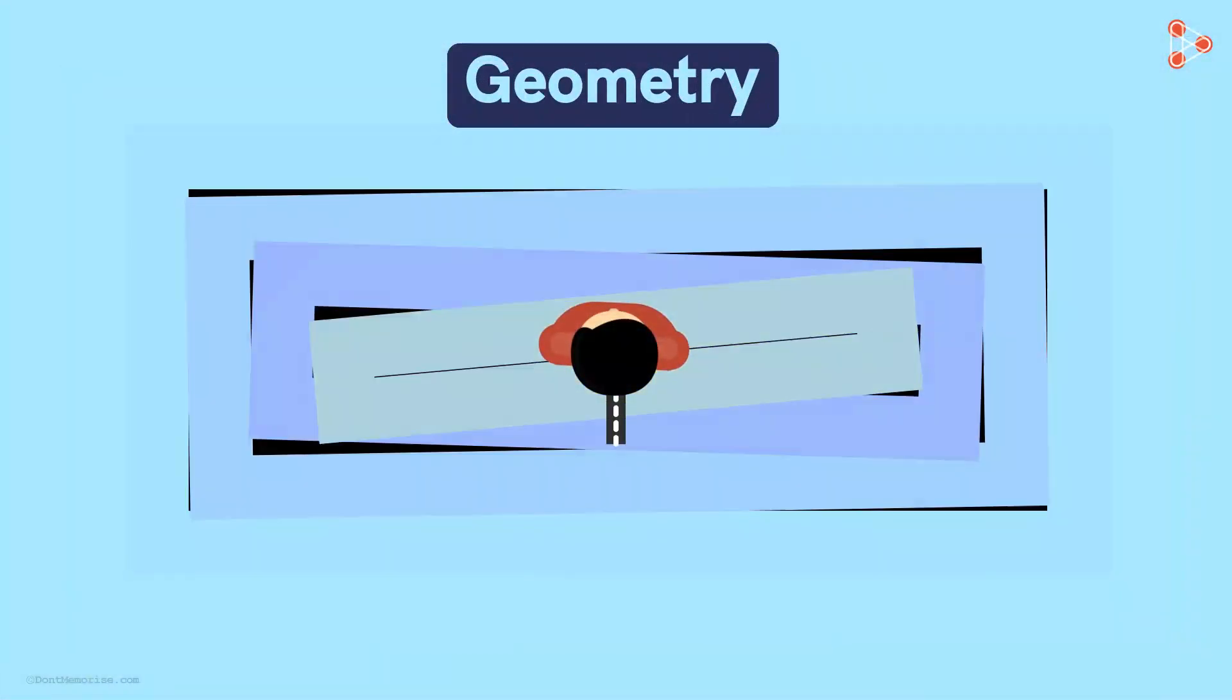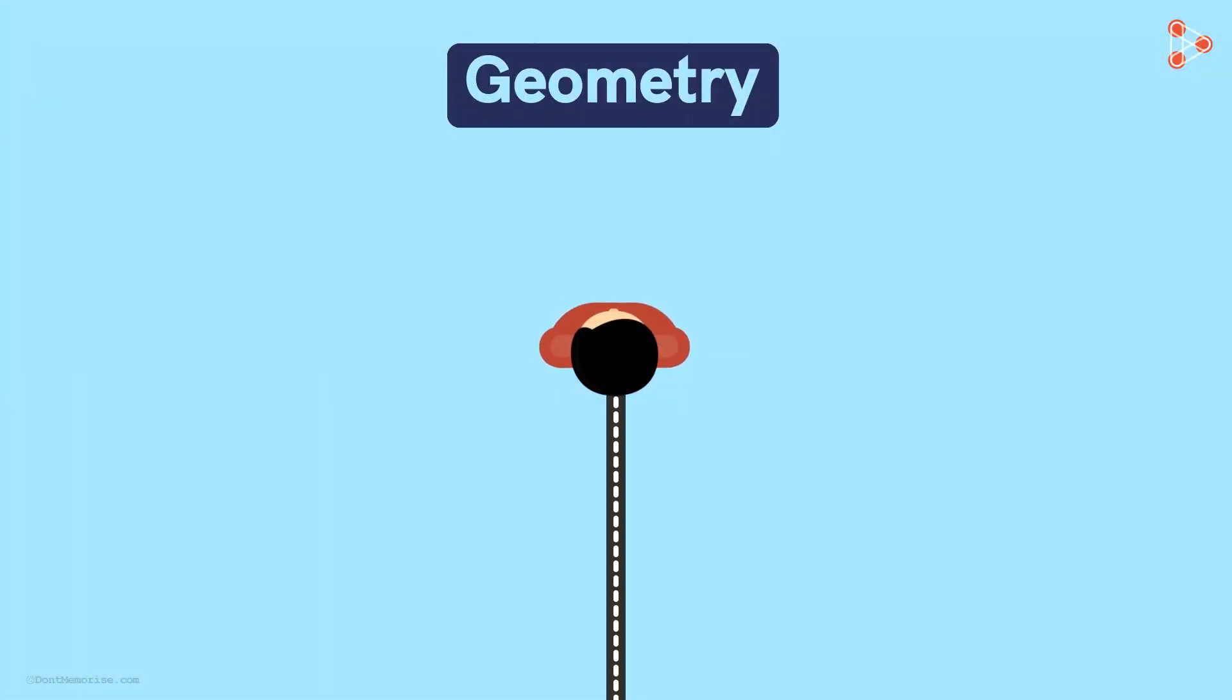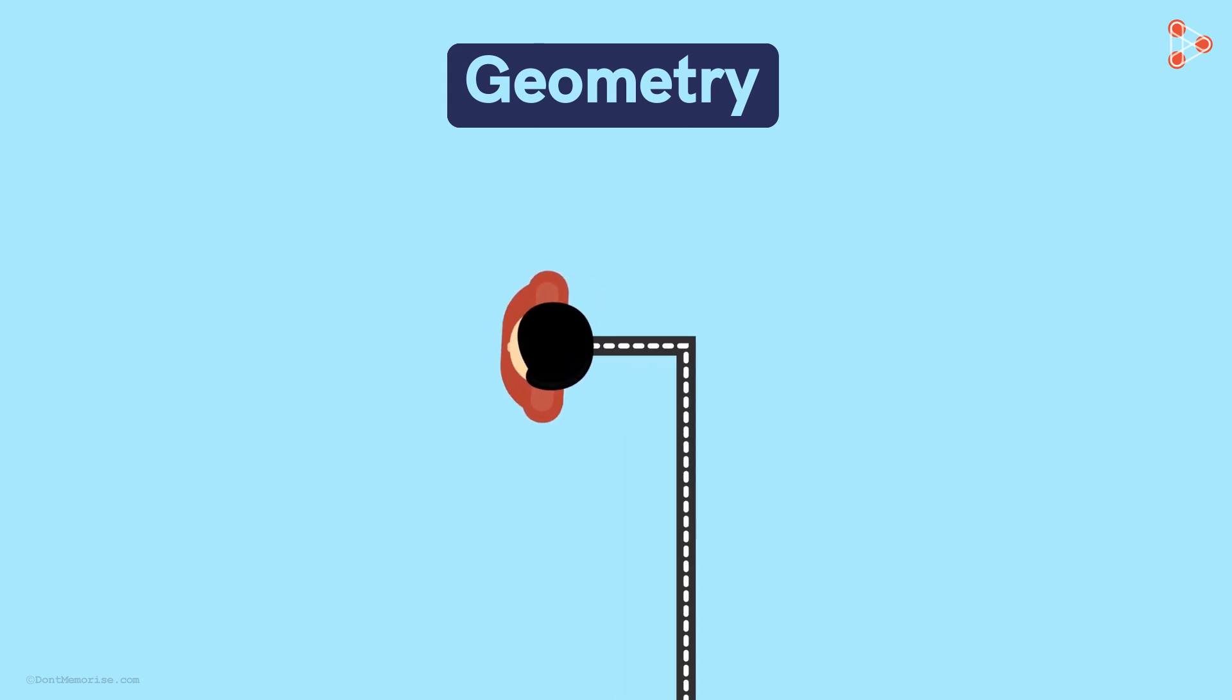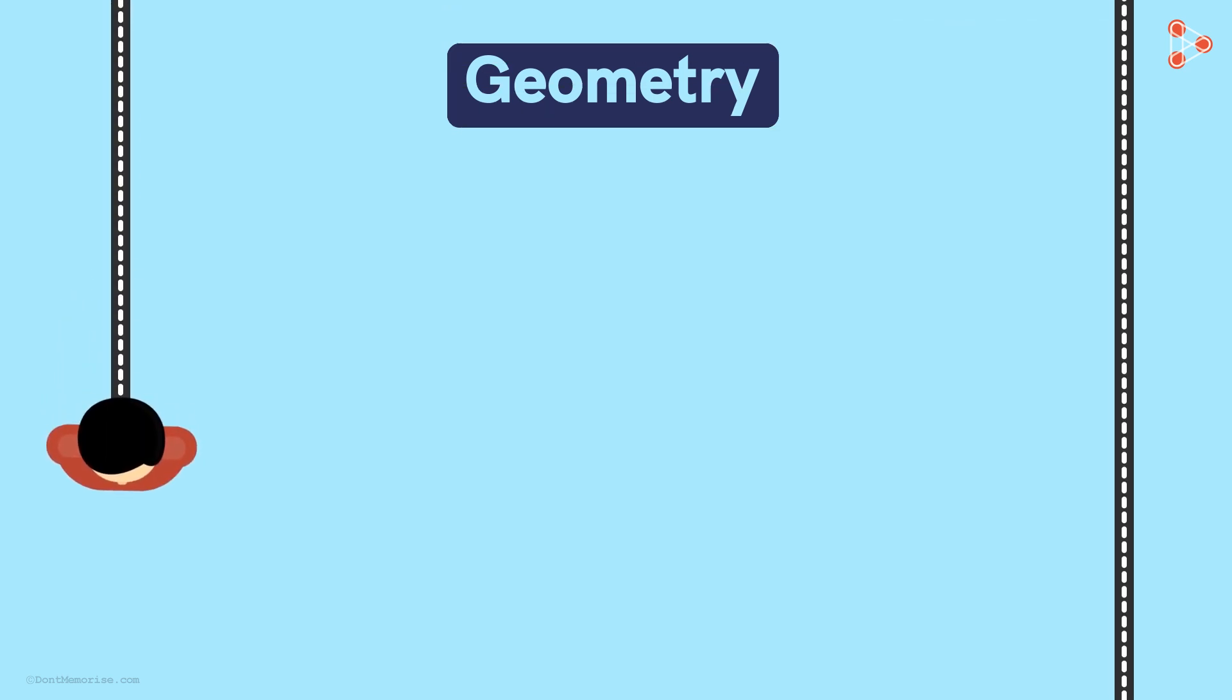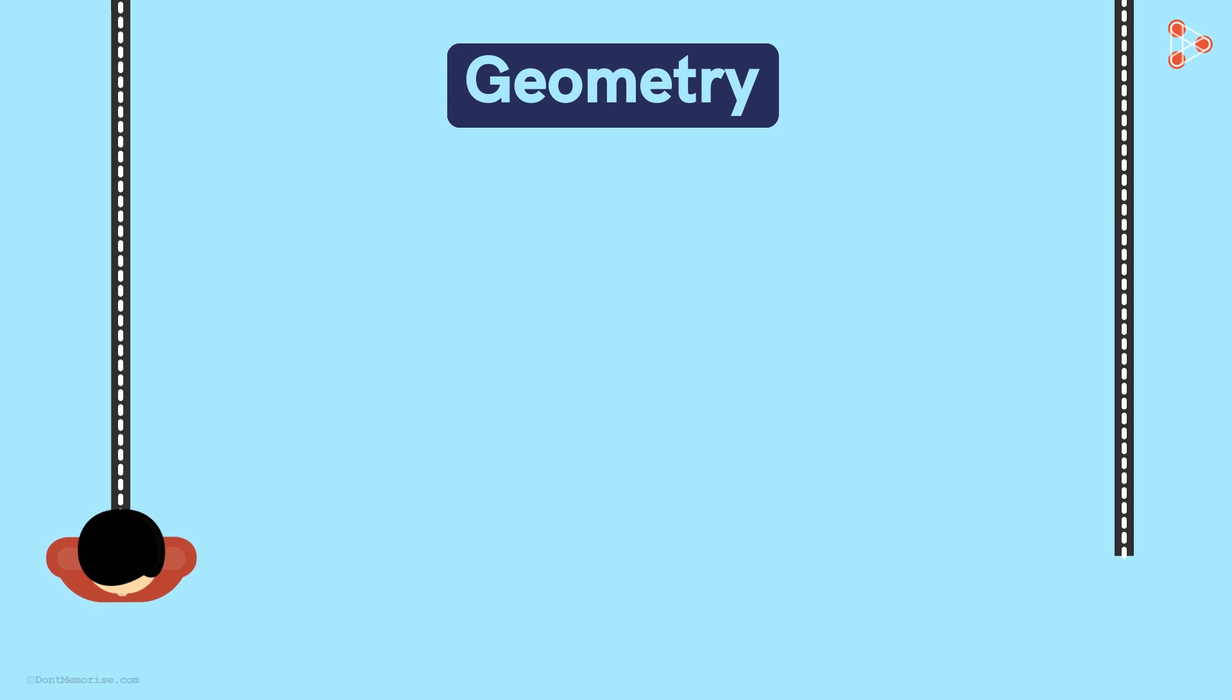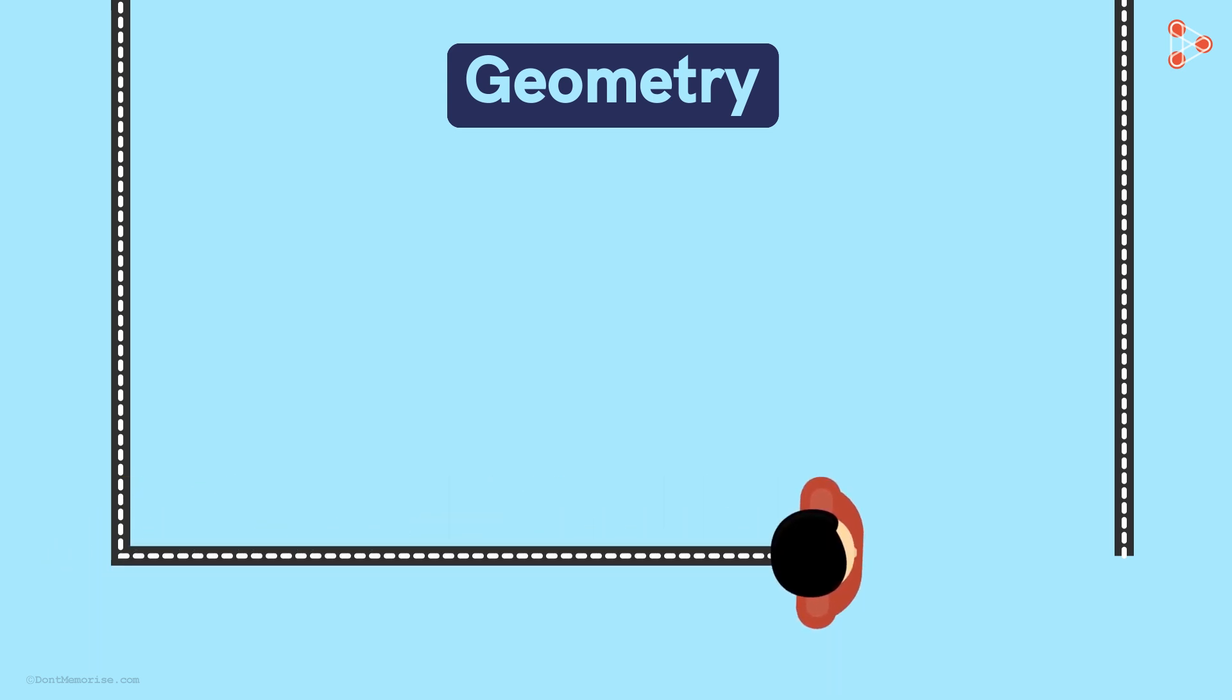Imagine that we are walking in a straight line for one kilometer. After that, we turn left and walk one kilometer in this direction. Then again, we turn left and walk one kilometer in this direction. Now for the last time, we turn left and walk one kilometer. We would find that we are at the same place we started from.